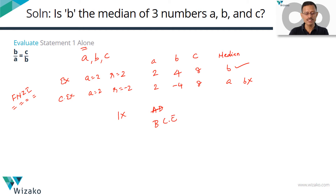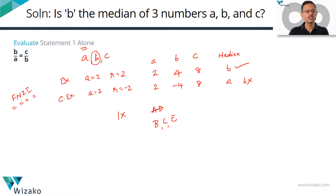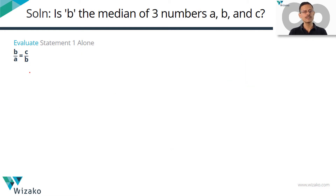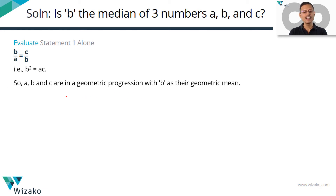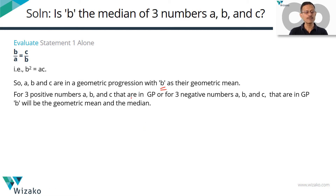Let's understand: if three numbers are in GP, when will B — the middle value, the geometric mean — be the median, and when will it not? B/A = C/B points to B² = AC, meaning these numbers are in a geometric progression with B as their geometric mean. If three numbers are in GP, you could have all three numbers positive, or all three negative.